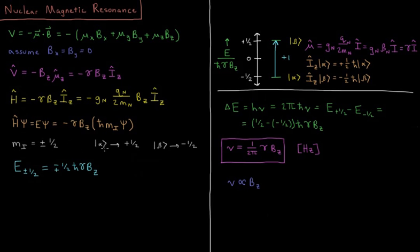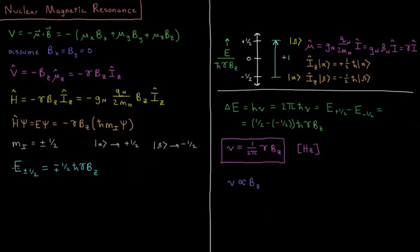That gives us minus gamma·Bz times the eigenvalue ħ·mI times the wave function. So our magnetic energy for a given nucleus, depending on whether we have spin up or spin down, is E(±½) = ∓½·ħ·γ·Bz. If it's alpha, our energy is negative; if it's beta, our energy is positive. In the absence of a magnetic field, there is no magnetic energy — the two states are equal. The degree to which the energy levels split depends on the magnetogyric ratio, which depends on the charge, mass, and nuclear g-factor of the nucleus.